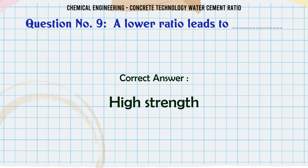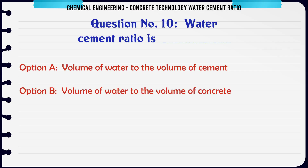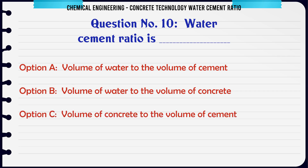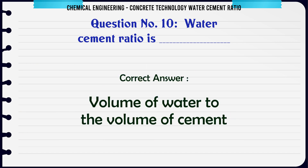Water-cement ratio is defined as: A. Volume of water to the volume of cement, B. Volume of water to the volume of concrete, C. Volume of concrete to the volume of cement, D. Volume of water to the volume of aggregates. The correct answer is volume of water to the volume of cement.